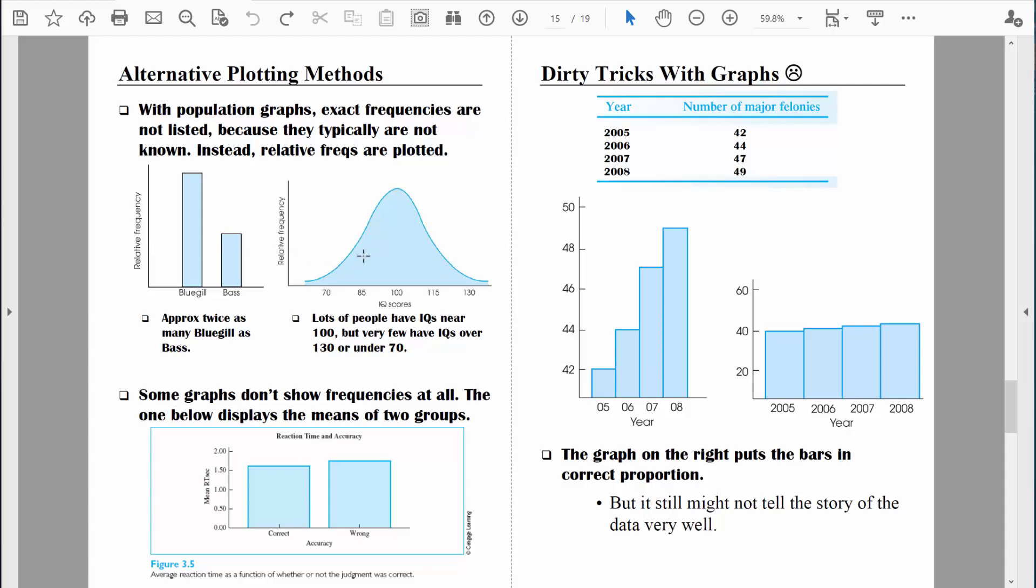We can also create population graphs when we have quantitative data. IQ scores make a good example. IQ tests are created so that the average score will equal 100. So we know most people are going to score somewhere right around 100. I can't tell you exactly how many people in the population are going to score 100, but I know that's what we're going to find more than other values. So the relative frequency around 100 will be high, and the relative frequency around 130 will be low.